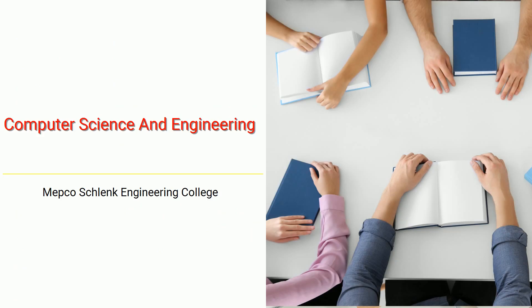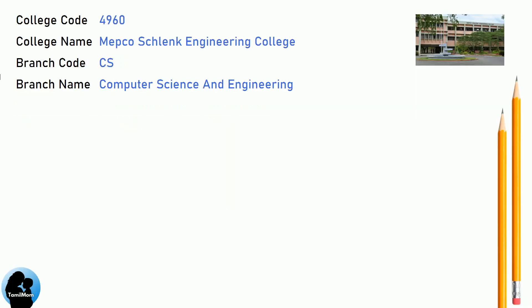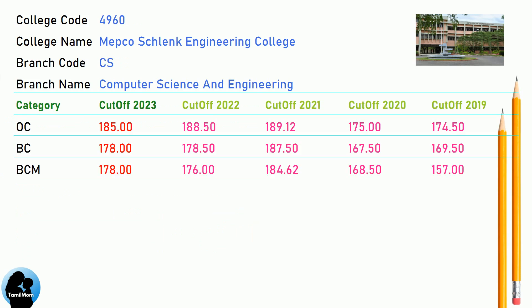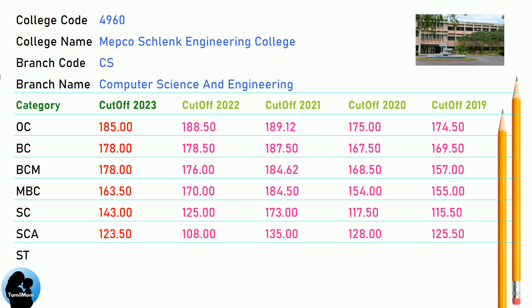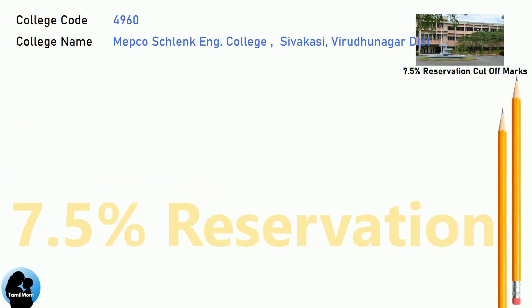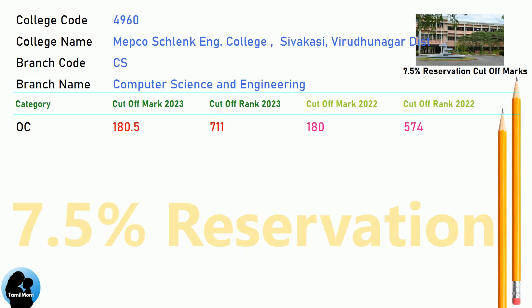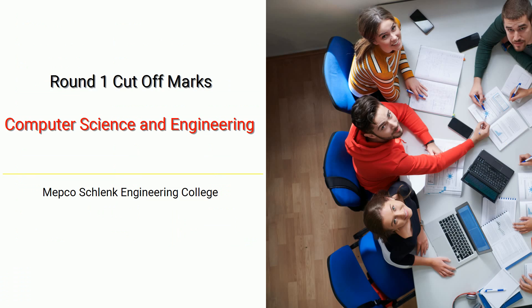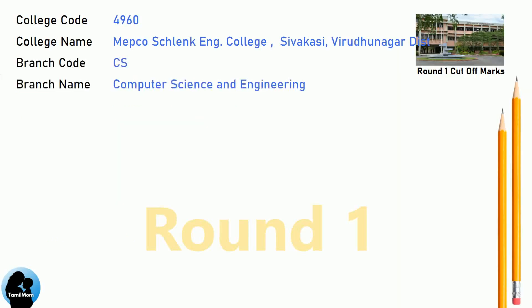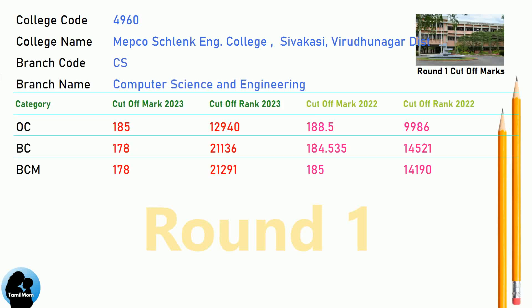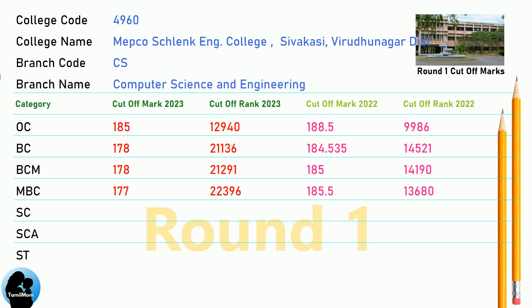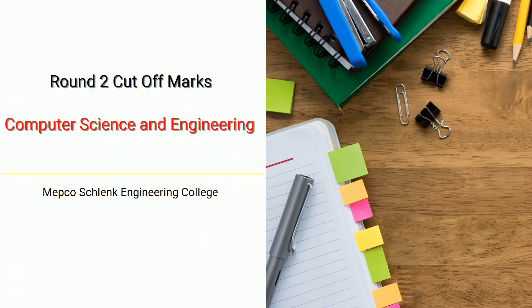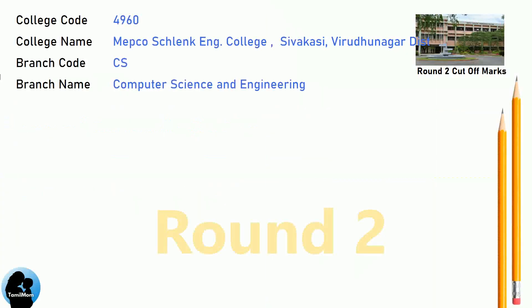Cut-off for Mepco Schlenk Engineering College in Computer Science and Engineering. 7.5 Reservation Cut-off, Round 1 Cut-off, and Round 2 Cut-off for Mepco Schlenk Engineering College in Computer Science and Engineering.